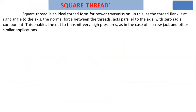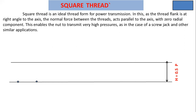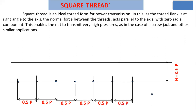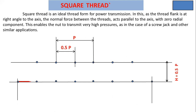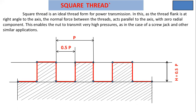Square thread is an ideal thread form for power transmission. As the thread flank is at right angles to the axis, the normal force between the threads acts parallel to the axis with zero radial component. This enables the nut to transmit very high pressure, as in the case of a screw jack. The height and width of each thread is equal to 0.5P — height equals half the pitch and width of each thread also equals half the pitch.